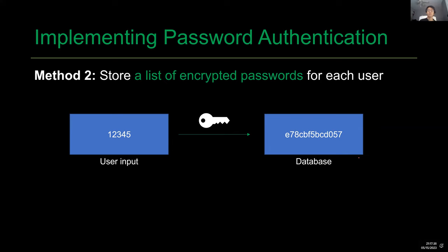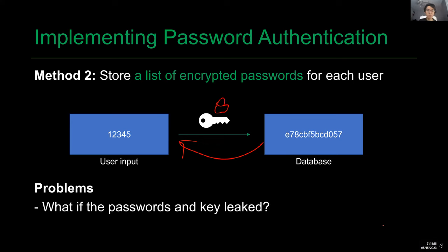So let us try to scramble what is in the password database — let us encrypt the contents using a super secret encryption key. Every time the user logs in and puts in '12345', that is encrypted into a random string of characters that we can decrypt later to form the plaintext. This is better than the last method, but it just kicks the problem down the road. Instead of keeping the database secret, we're now forced to keep the encryption key secret — which is literally the same problem as the first method.